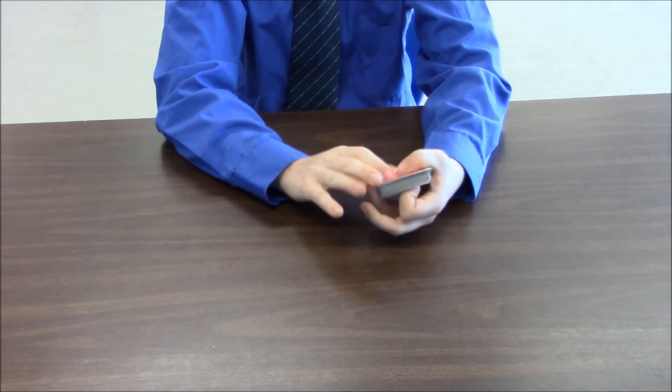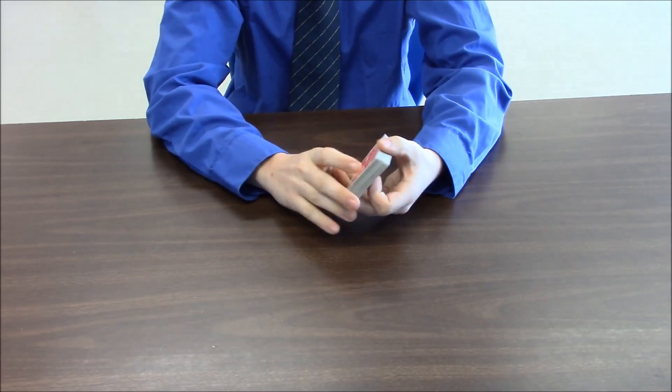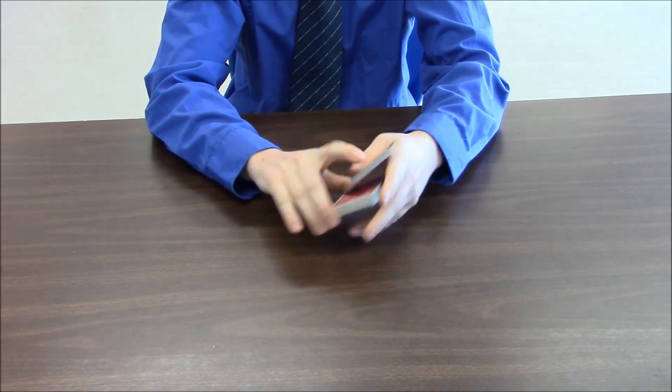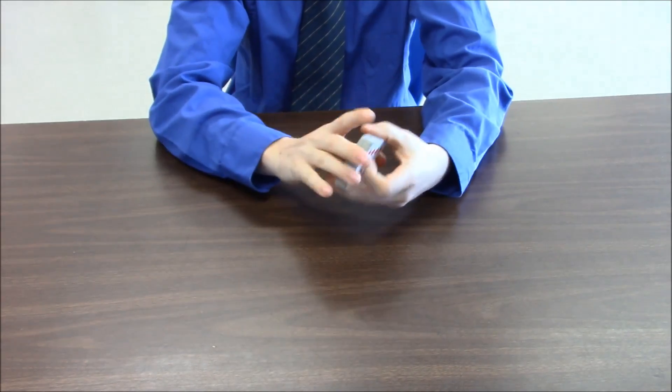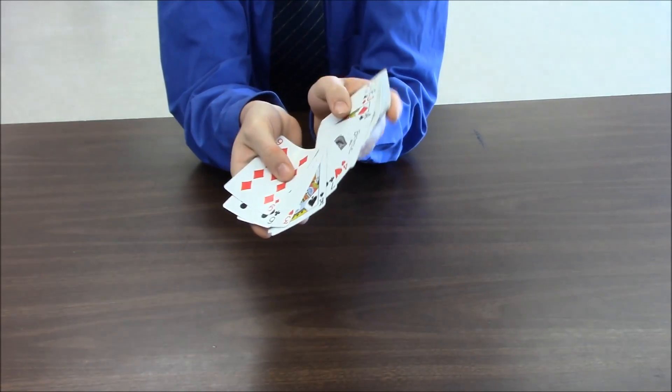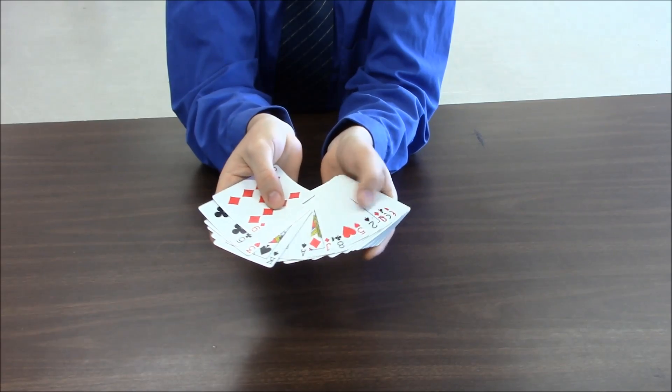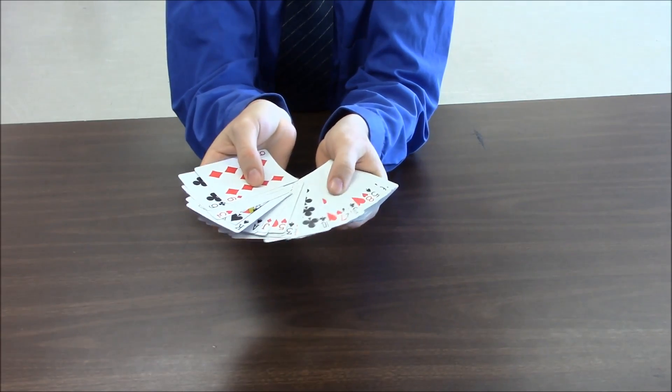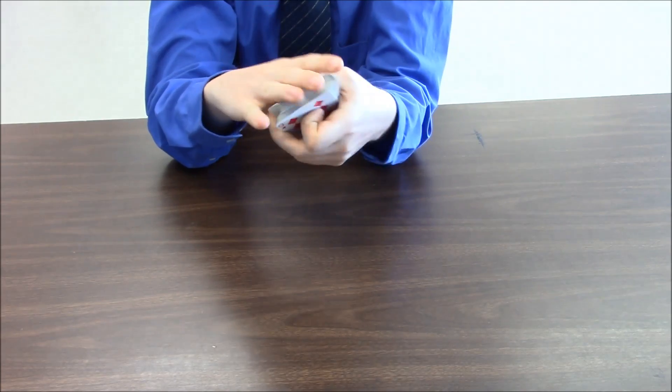And when performing the trick, you can cut the deck a few times. That still doesn't change the order of the cards. You can also show the cards to the audience because just looking at the cards, you will not be able to tell that they are in a particular order, even though they are.